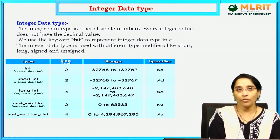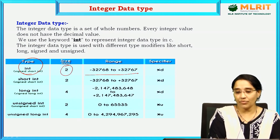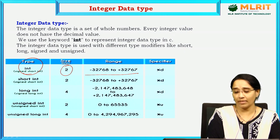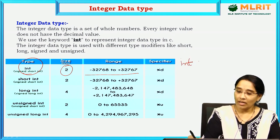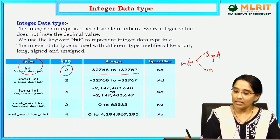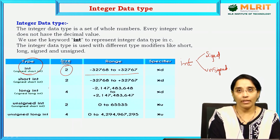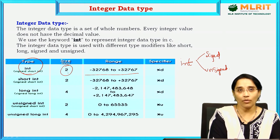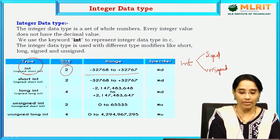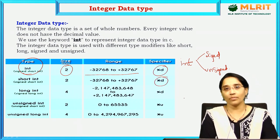For integer data type — if you declare any variable under the type integer, the size of the integer is 2 bytes and the range is from minus 32768 to 32767. Integer has modifiers: signed int and unsigned int. The format specifier for integer is %d, which you use in scanf and printf functions.